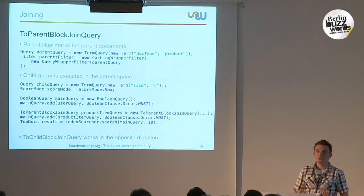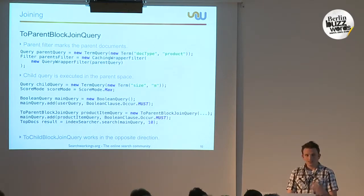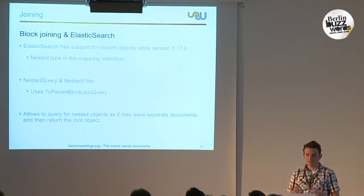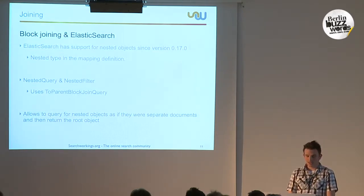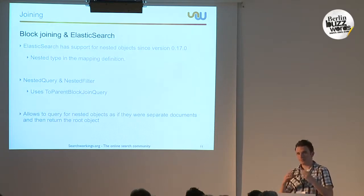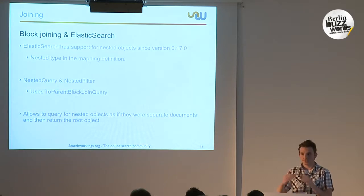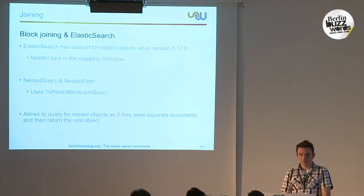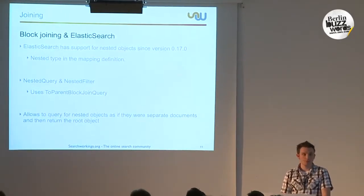There is quite some code involved, but there is an out-of-the-box solution. Elasticsearch has block join support — called a 'nested query' in Elasticsearch. You can define a nested type inside your mapping and independently query on these nested types, getting back the root object as a result. Under the hood it uses the ToParentBlockJoinQuery, so if you want an easier solution you can take a look at that.